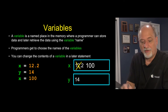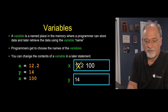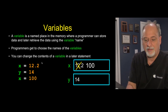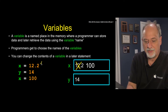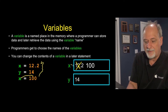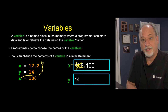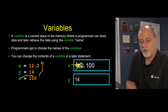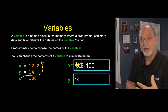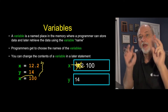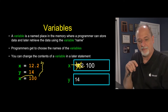These variables hold one value. So if we have two assignment statements and then a third one executes that says put 100 into x, that wipes out the old value of 12.2 and rewrites it with 100. We can change variables — that's another reason we call them variable.